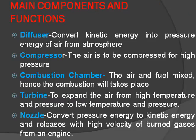Main components and functions of turbojet engine. The first is the diffuser, one of the basic and main components. It converts kinetic energy into pressure energy of air from the atmosphere. Next is the compressor — a rotary compressor is used, and the air is compressed to high pressure.